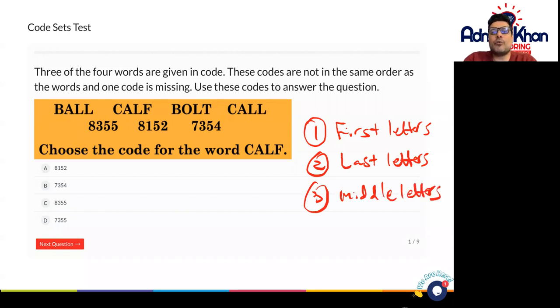We've got four words here but we've only got three codes and those three codes belong to those three words but there's a code that's missing and we need to find out what the code for the word calf is going to be.